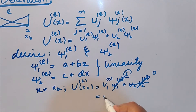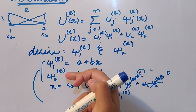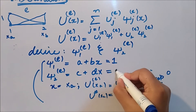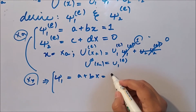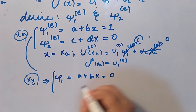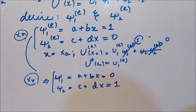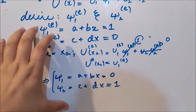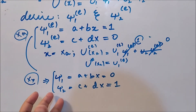Similarly, at x = x_b, ψ_1(x_b) = 0 and ψ_2(x_b) = 1. This gives us four equations: ψ_1 and ψ_2 evaluated at x_a and x_b. We have four equations and four unknowns (a, b, c, d), so it is time to solve for them. We start by solving for ψ_1, writing a + bx_a = 1 and a + bx_b = 0.